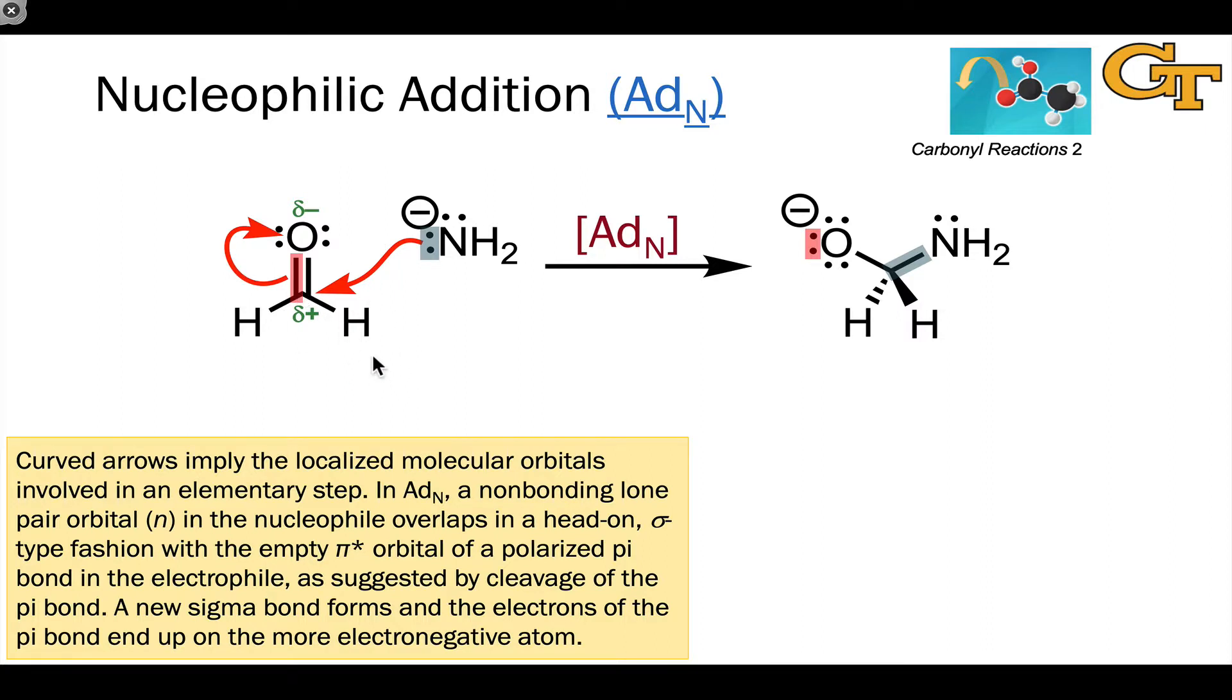This step involves an n-to-pi star interaction. The source orbital, the filled orbital, is a non-bonding lone pair orbital on the nucleophile, and the acceptor orbital, or electron sink, is the pi star, or pi-antibonding orbital, associated with the polarized pi bond. That's going to have a larger lobe on the electrophilic atom within the pi bond, here the carbonyl carbon. The product we get bears a negative charge on the more electronegative atom in the pi bond, here oxygen.